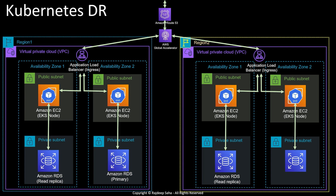Now, what about the database? Since you are running the database in two regions, you need some sort of database replication. This will change based on the database you use. If you are using Amazon Aurora, you can use global tables, which will handle replication out of the box. If you are using RDS, you can have a primary RDS instance and use read replicas across multiple regions. When region one goes down, you need to promote one of the read replicas to a primary instance, since the primary can do both reads and writes.